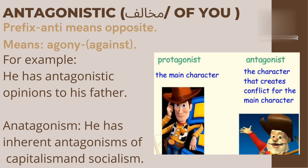The next word is 'antagonistic' — مخالف. It is a combination of the prefix 'anti,' meaning opposite, and 'agony,' also meaning against. For example: 'He has an antagonistic opinion to his father' — وہ اپنے باپ کے خلاف رائے رکھتا ہے. As you can see in the image, the protagonist is the main character of the story, while the opposite is called the antagonist. The family word is 'antagonism' — 'He has inherent antagonism of capitalism and socialism.'